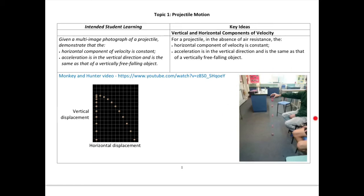I have a picture here demonstrating a multiple image photograph, but it wasn't done using a traditional technique — it was done using an app from Sony called Motion Shot. Lee and Sebastian demonstrated that in the lab for me. If you'd like to download the Motion Shot app and have a go at constructing one of those multiple image photographs, you can do that. It's much easier to do with modern cameras that have high speed video, and even motion sensors.